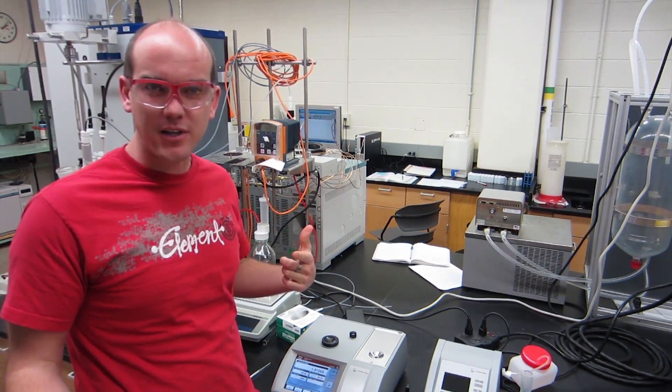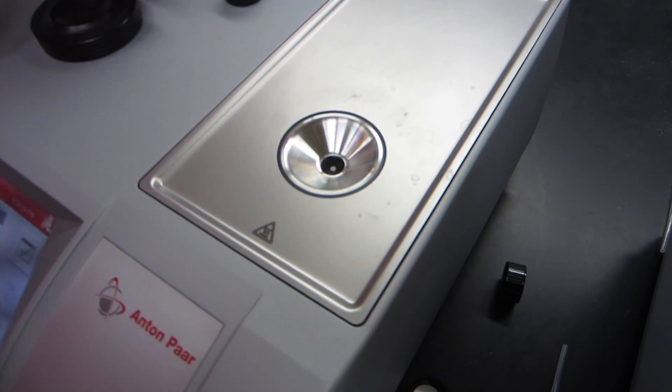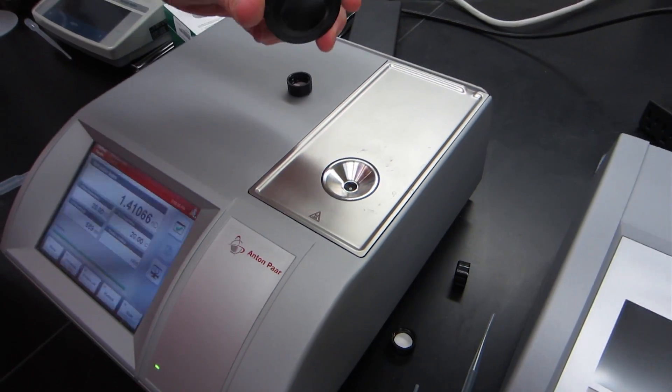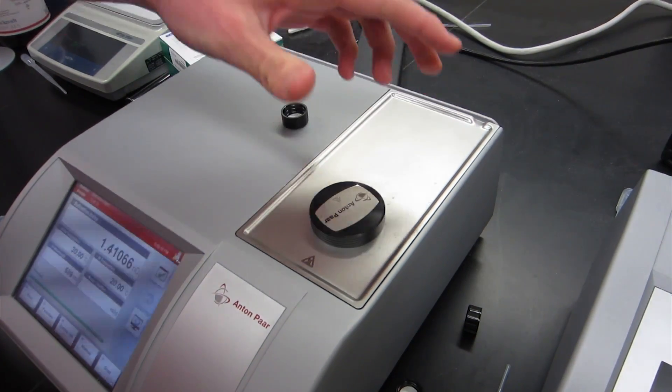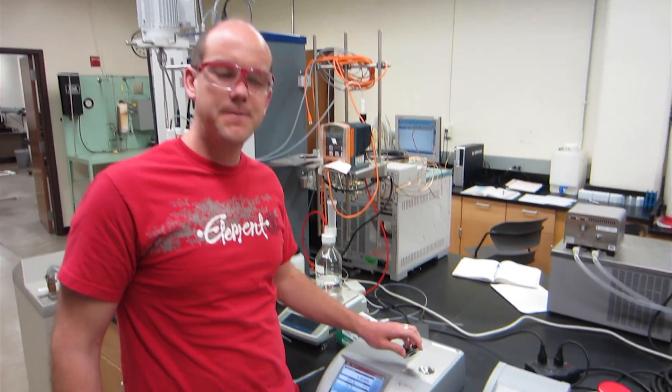After we take the samples of the distillate and the bottoms composition, we come here, we insert the sample into this receptacle right here, fill about halfway full, put the lid over it, and hit start. It'll give you the refractive index after which we go and we have an excel sheet provided to us on the problem statement and we use that to convert that to composition.